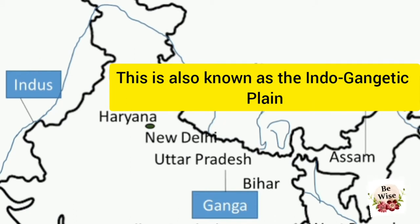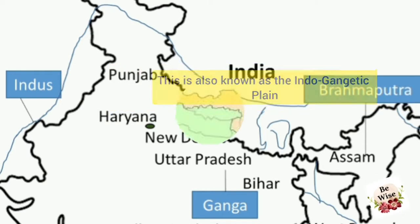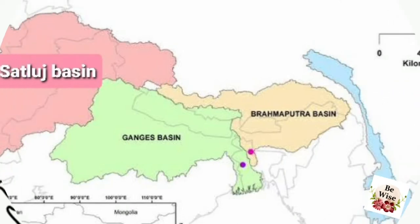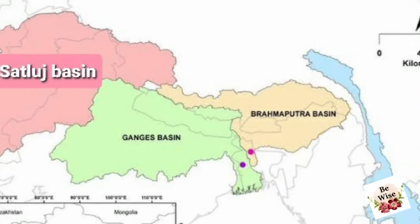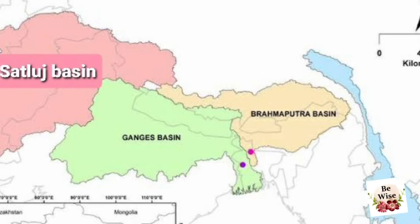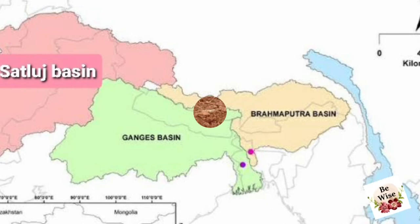It is named after two big rivers — the Ganga and the Indus. The rivers divided the Northern Plain into three river basins: the Satluj Basin, the Ganga Basin, and the Brahmaputra Basin.